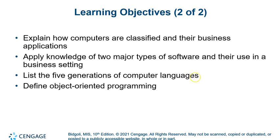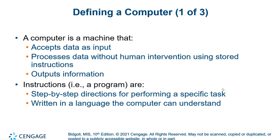We'll look at some of the major terminology for software in a business context. There are different generations of computer languages, and I'm old enough that I've seen several — though not the very beginning. We'll also look at this new thing called OOP, or object-oriented programming. Please believe me: I know the vast majority of you are not planning careers as computer programmers or computer scientists, but anybody in business needs to know some of the basics to climb to the top of an organization.